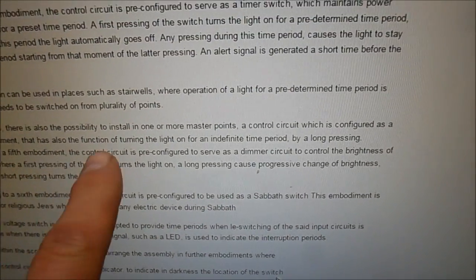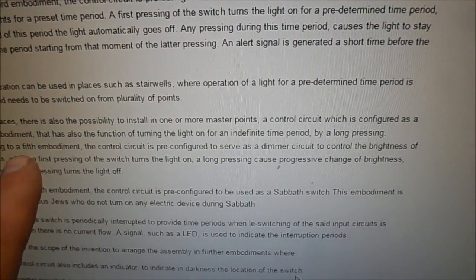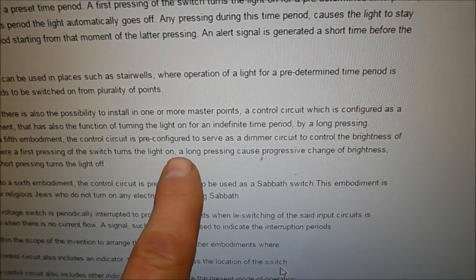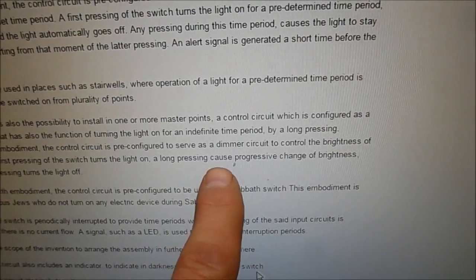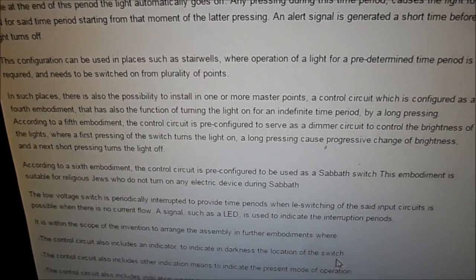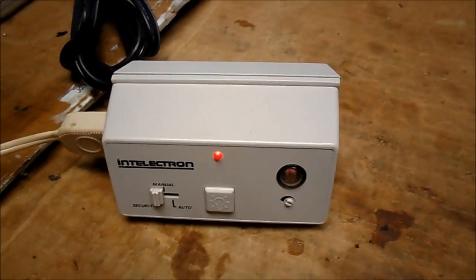And I was looking, scrolling through some of these patents here, and this is from that company, and it describes a form of a blinking LED, which this thing does, and a microcontroller, which is that TI chip, and basically what led me to the switch is that it tells you it's pre-configured to be used for the Sabbath, there's a Sabbath mode, and it talks about the switch. The one switch at the first pressing, the switch turns on the light, but here's the key, a long pressing causes progressive change of brightness, and the next short pressing turns the light off, and that's how this operates.